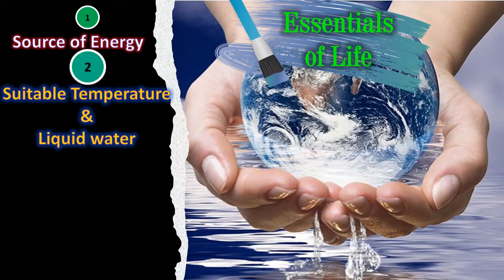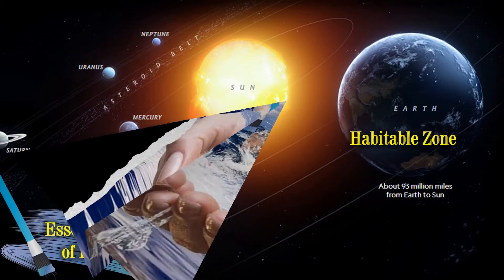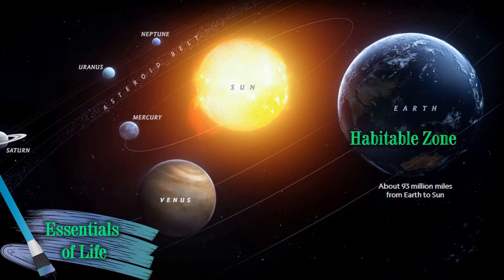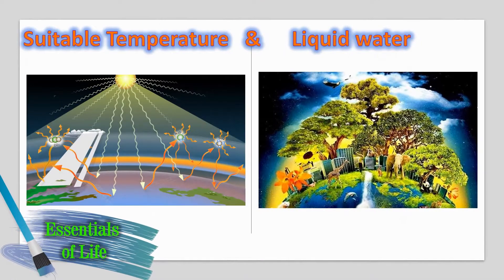The next essential condition for survival of life is suitable temperature and liquid water. Fortunately, we are at the right distance from the sun. Our Earth orbits the sun in the so-called Goldilocks Zone, which is referred to as the habitable zone around a star, where temperature and other conditions are just right for the existence of life.